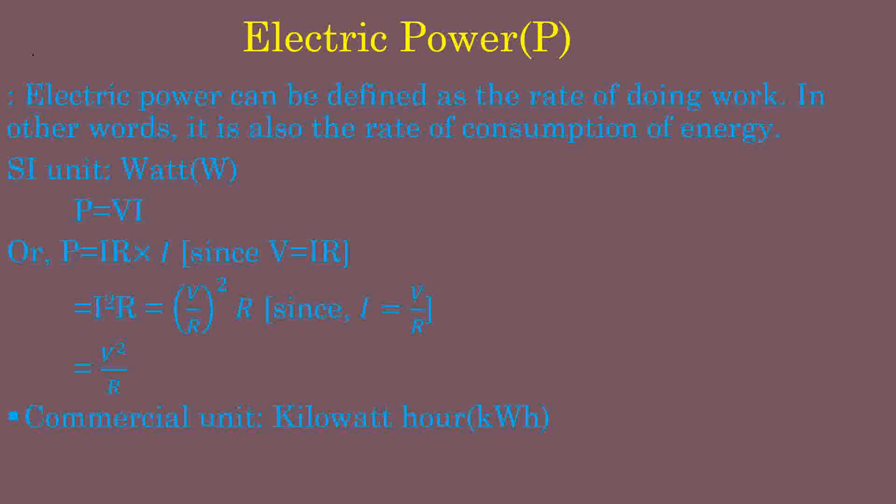The commercial unit of electric energy that we consume is the kilowatt-hour (kWh), and one kilowatt-hour equals 3.6 × 10⁶ joules. The electricity department calculates the amount we pay based on the rate and the amount of energy consumed.